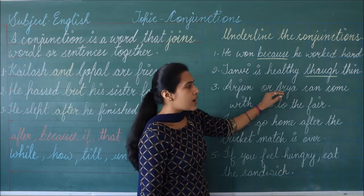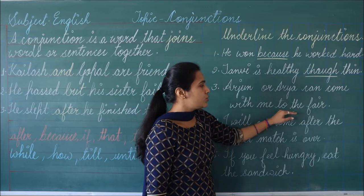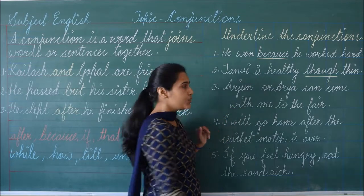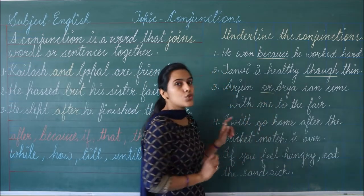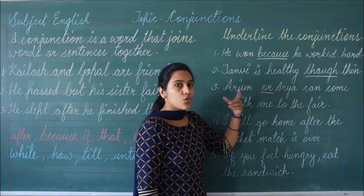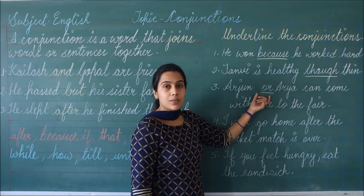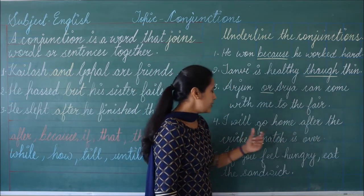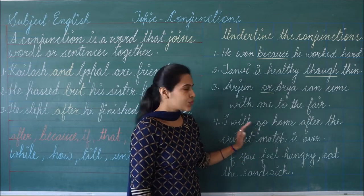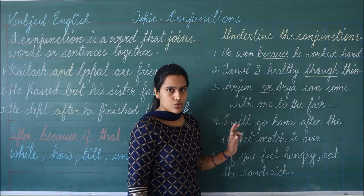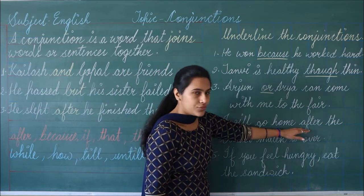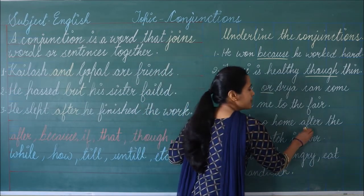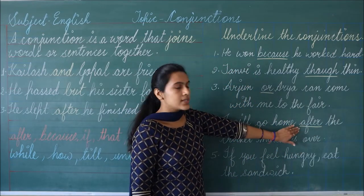Third one: 'Arjun or Arya can come with me to the fair.' Arjun या Arya में से कोई भी एक मेरे साथ आ सकता है. We are using the word 'or' to give a choice between Arjun and Arya — तो यह भी हमारा conjunction है. Fourth one: 'I will go home after the cricket match is over.' Someone is saying मैं घर तब जाऊंगा जब cricket match over हो जाएगा. We are using the word 'after' to join the first sentence to the second sentence — so 'after' is our conjunction.